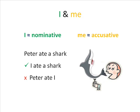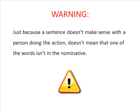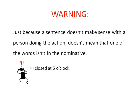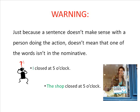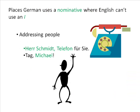I'll come on to what case 'shark' should be in next time. But two words of warning. Firstly, just because a sentence doesn't make sense with a person doing the action doesn't mean that one of the words is not in the nominative. So just because 'I closed at five o'clock' doesn't make much sense doesn't mean 'the shop' in 'the shop closed at five o'clock' isn't in the nominative. Secondly, there are also some places where German uses a nominative where English would or could not use an 'I' for various reasons.